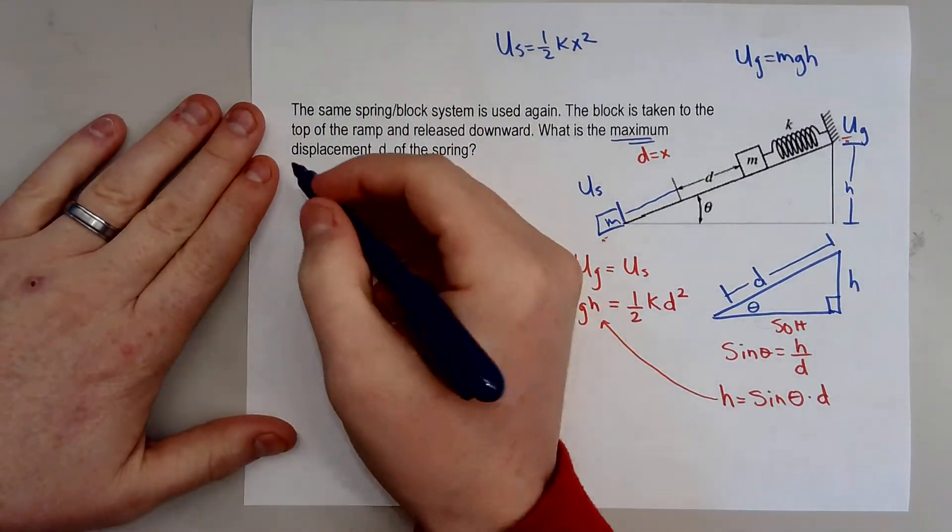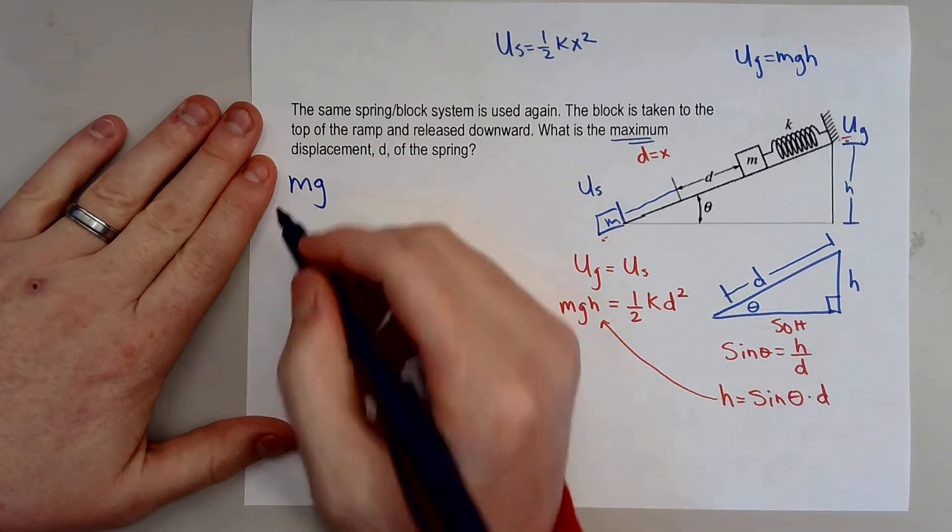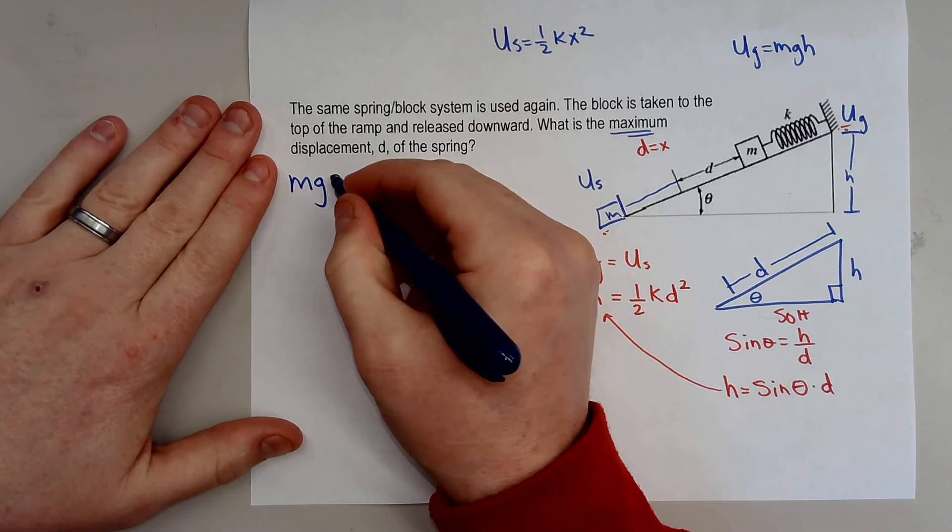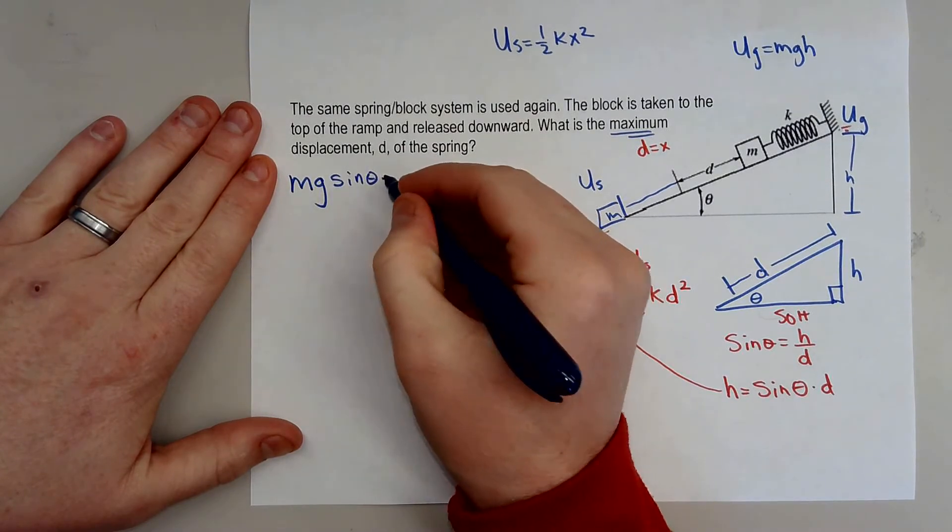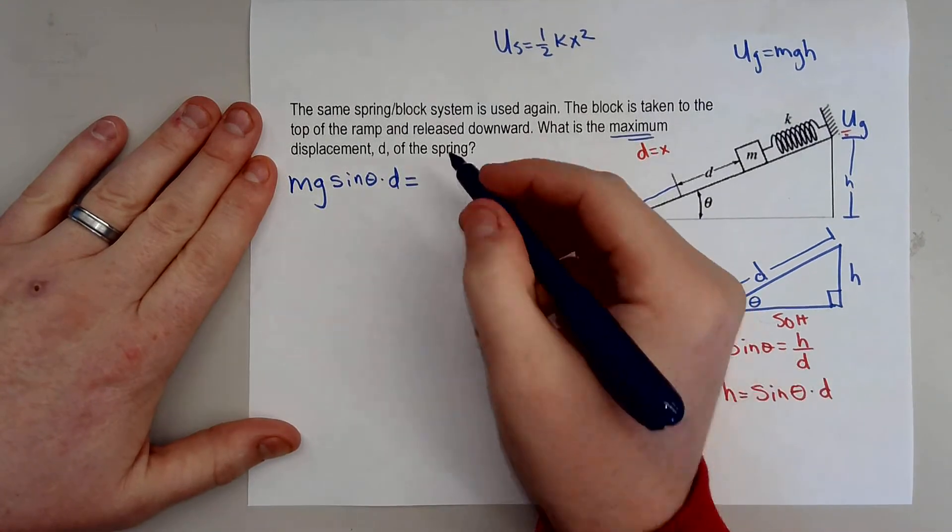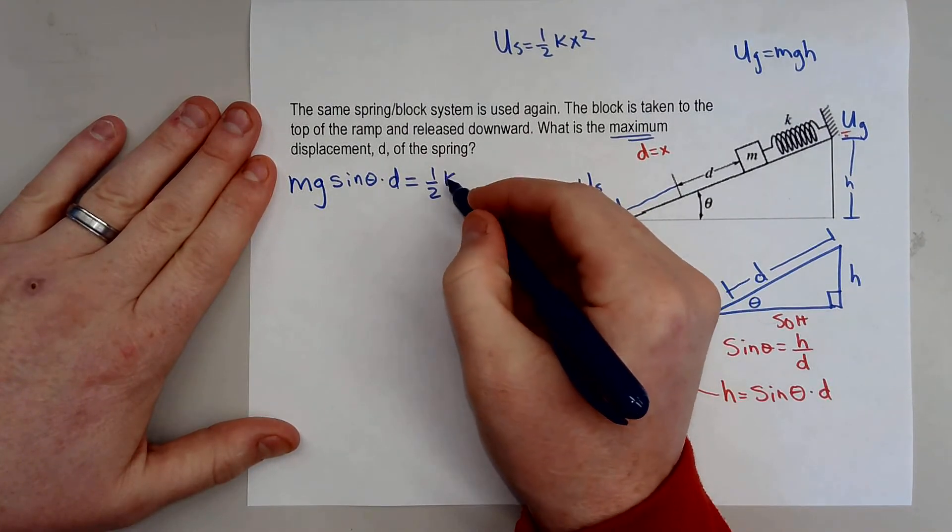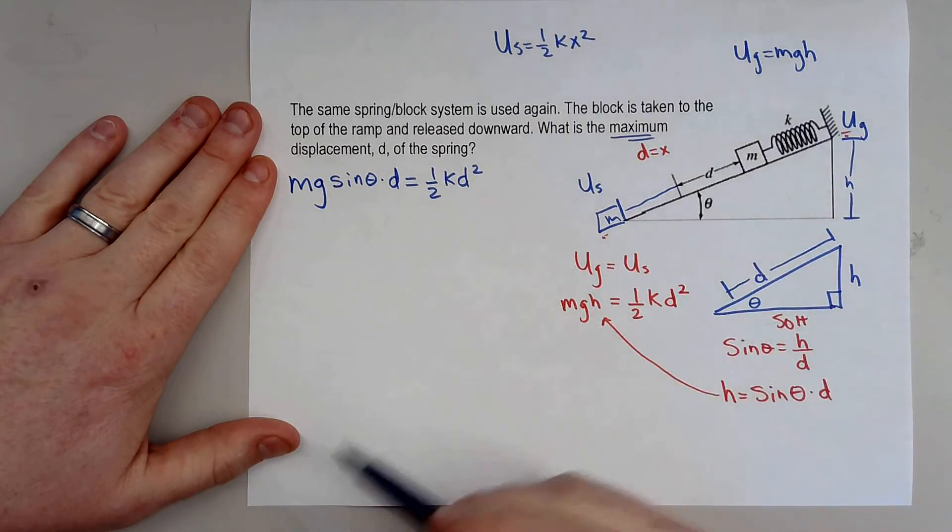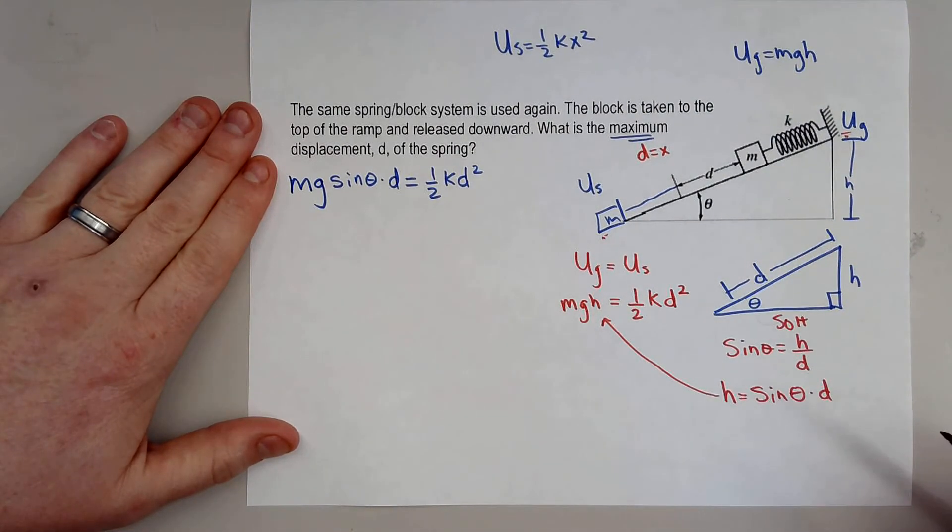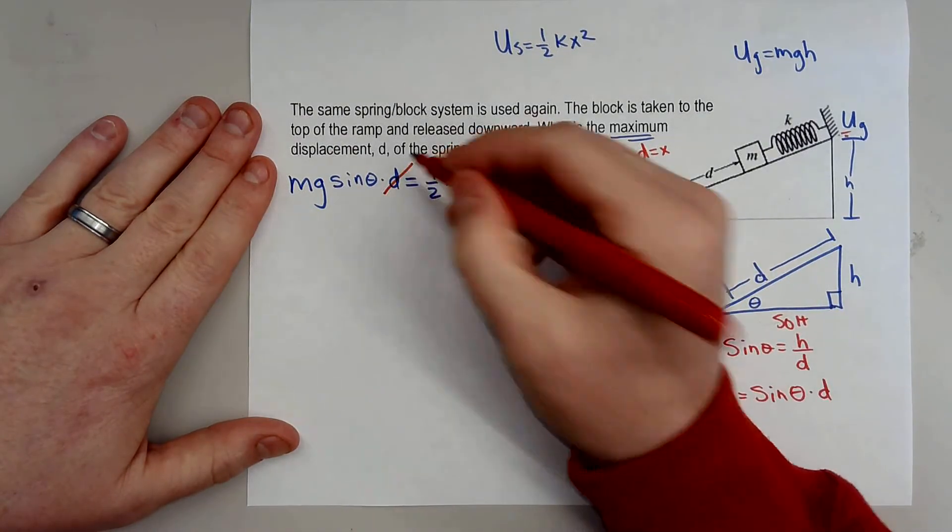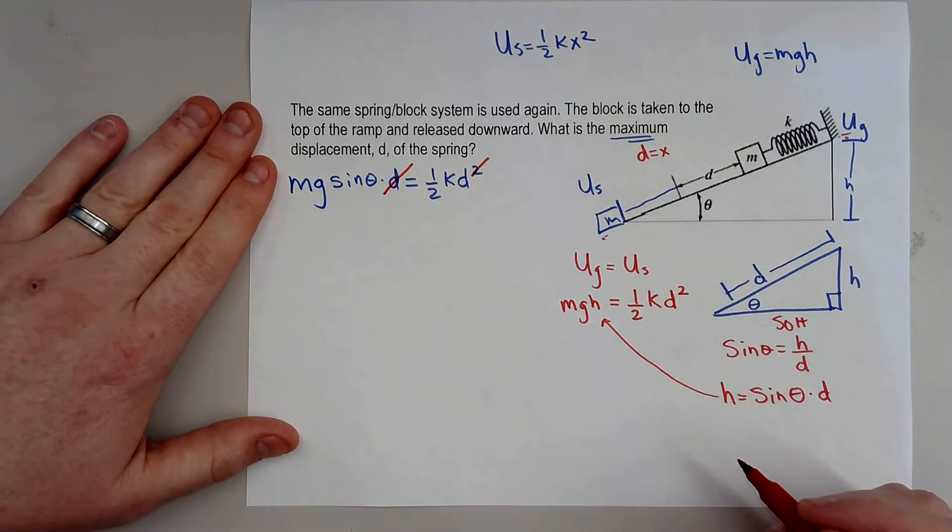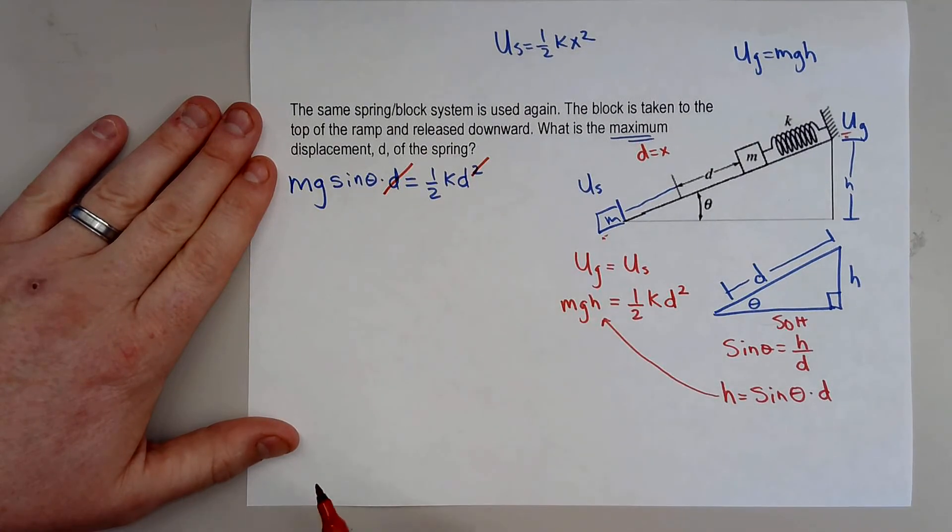So I now have M times gravity, so instead of H I'm going to type in sine theta times d is equal to one half k d squared and that distance like I said is just how far the spring will displace itself. And we can obviously see here that some things cancel out. There's a d over here and that will cancel out the square. And so now solving for our distance here you get